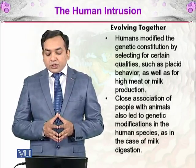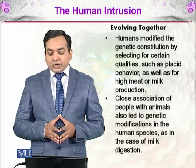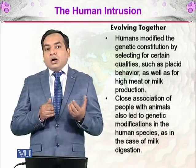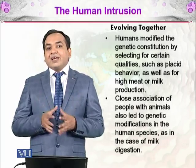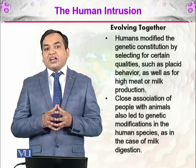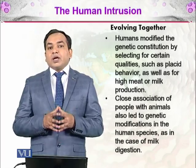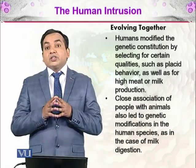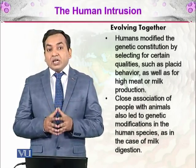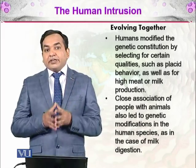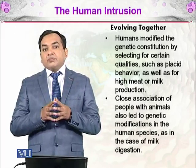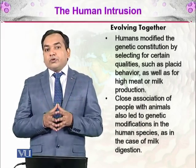Close association of people with animals also led to genetic modification in the human species, as in the case of milk digestion. Milk contains a sugar called lactose, and lactose is digested by an enzyme called lactase. If a community has been drinking milk for thousands of years, that community will have selection for the particular gene responsible for making lactase, which breaks lactose down into simpler sugars that are easily digested and absorbed into the human body.